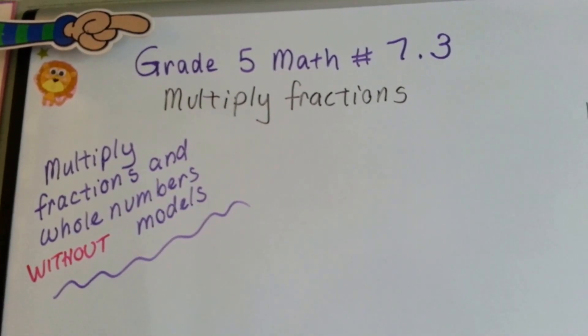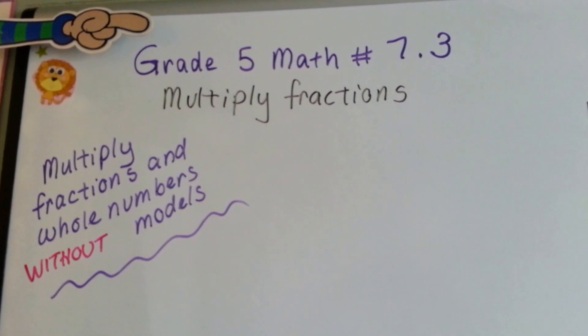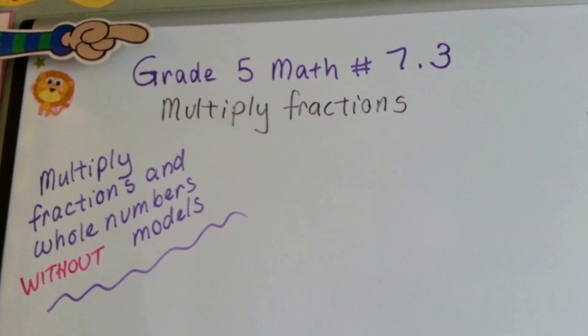Grade 5 math number 7.3, multiply fractions and whole numbers without models.